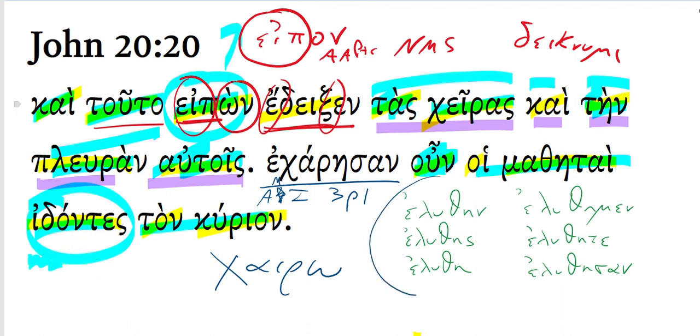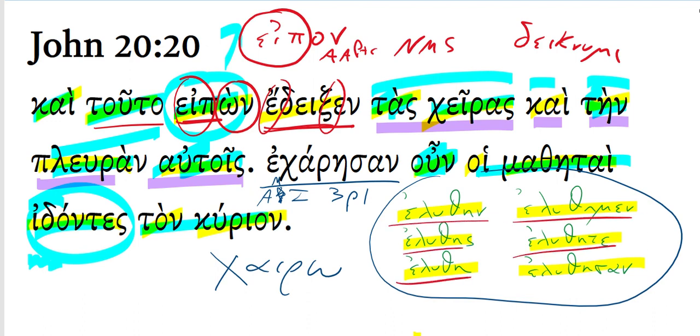And so I put the paradigm for the aorist passive here just to contrast it. So eluthane, eluthase, eluthay, eluthamen, elutheta, eluthason. Of course, that would just be translated: I was loosed, you were loosed, he was loosed, we were loosed, y'all were loosed, they were loosed.